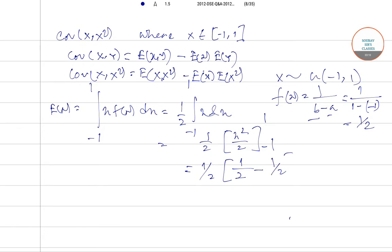Again for X², it will be 1/2[x³/3] from -1 to 1, which is 1/2(1/3 - (-1/3)), so 1/2 times 2/3, which equals 1/3.